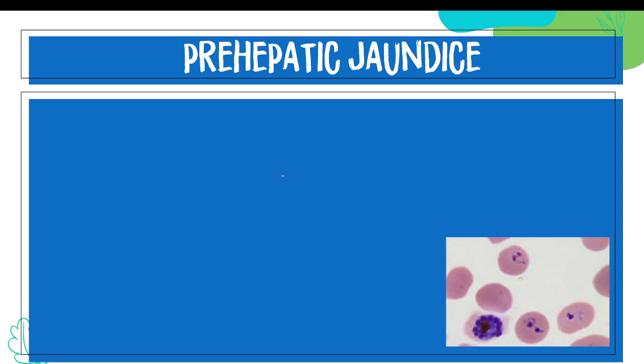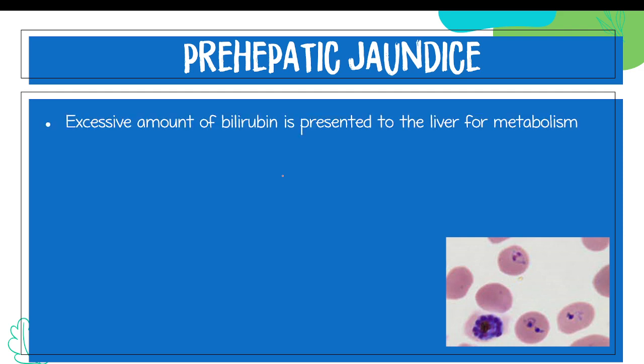With pre-hepatic jaundice, there is an excessive amount of bilirubin being presented to our liver for metabolism. It occurs when the problem is prior to your liver. Examples of causes include hemolysis, hemolytic anemia, and malaria. Hemolysis is the breakdown or RBC destruction. With hemolytic anemia, the problem is that your RBCs are being destroyed faster than they can be replaced, which is why anemia presents with very low levels of RBCs.